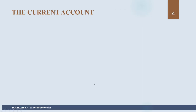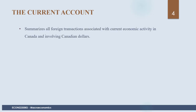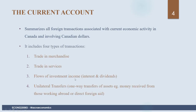The overall balance of payments is broken down into different accounts. The current account summarizes all foreign transactions associated with current economic activity in Canada involving Canadian dollars. It includes different types of transactions: first, trade in merchandise — exports and imports of goods — and also trade in services.